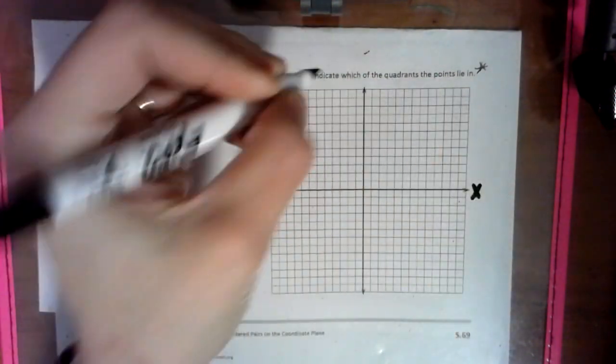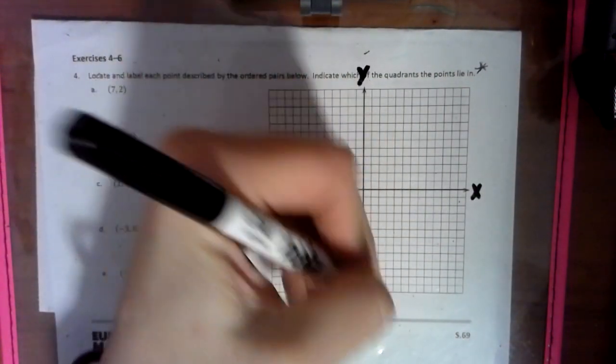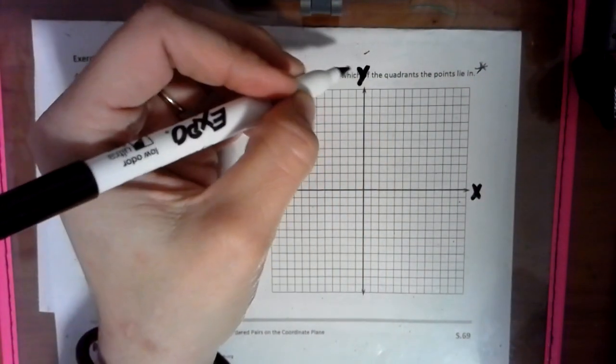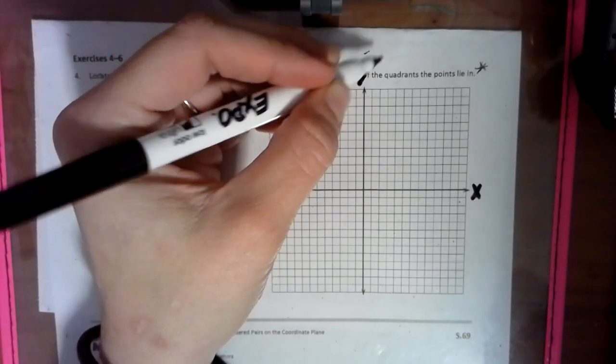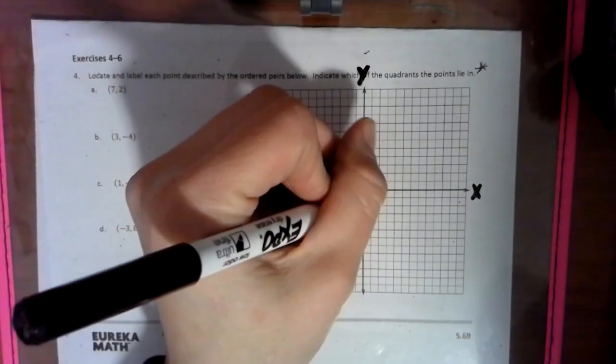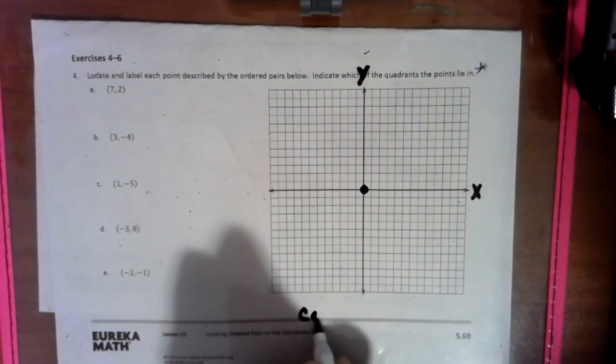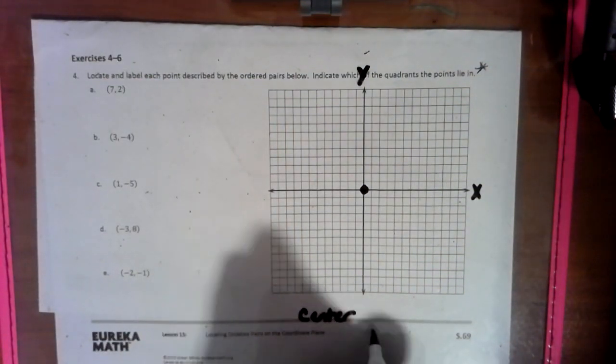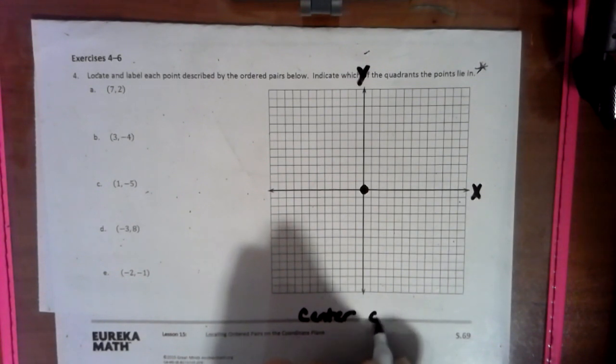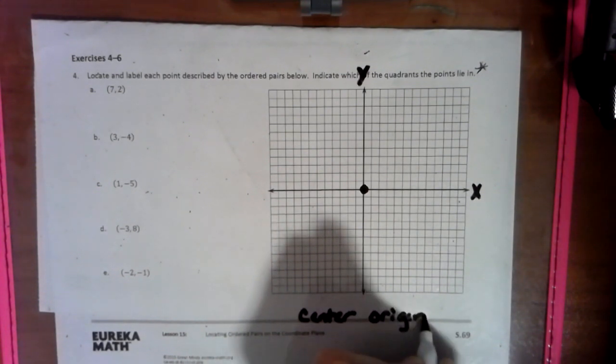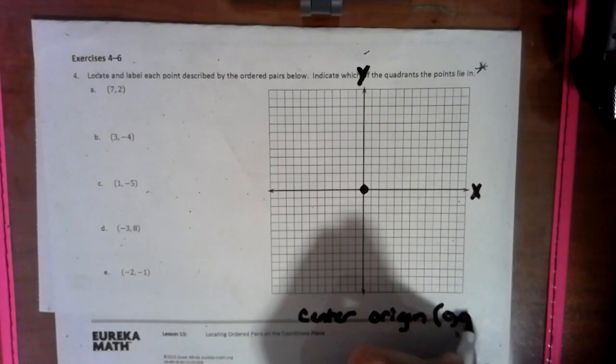So this is your x-axis, and this vertical line is your y-axis. You can kind of remember it as the stem of the y. That helps you out a little bit. And this center piece right here, that's called the origin. So the center where the two lines meet is called the origin, and that's at point 0, 0.